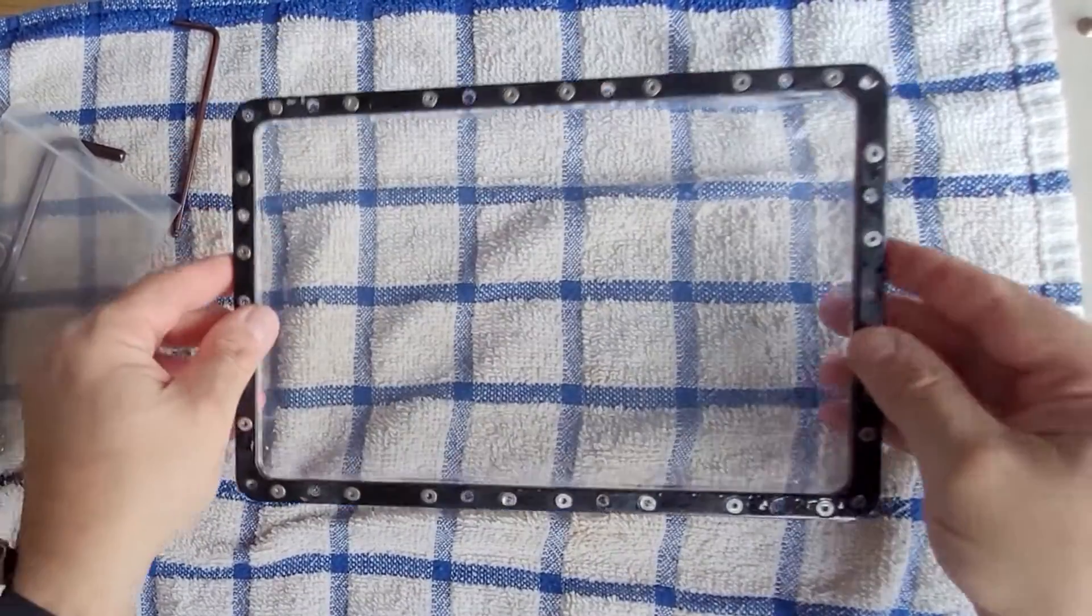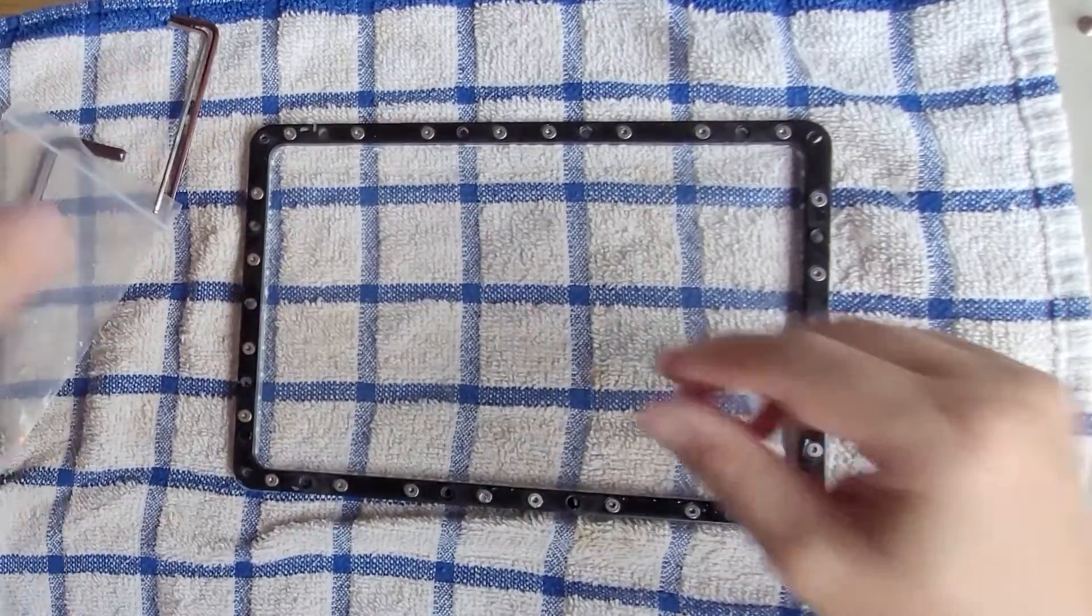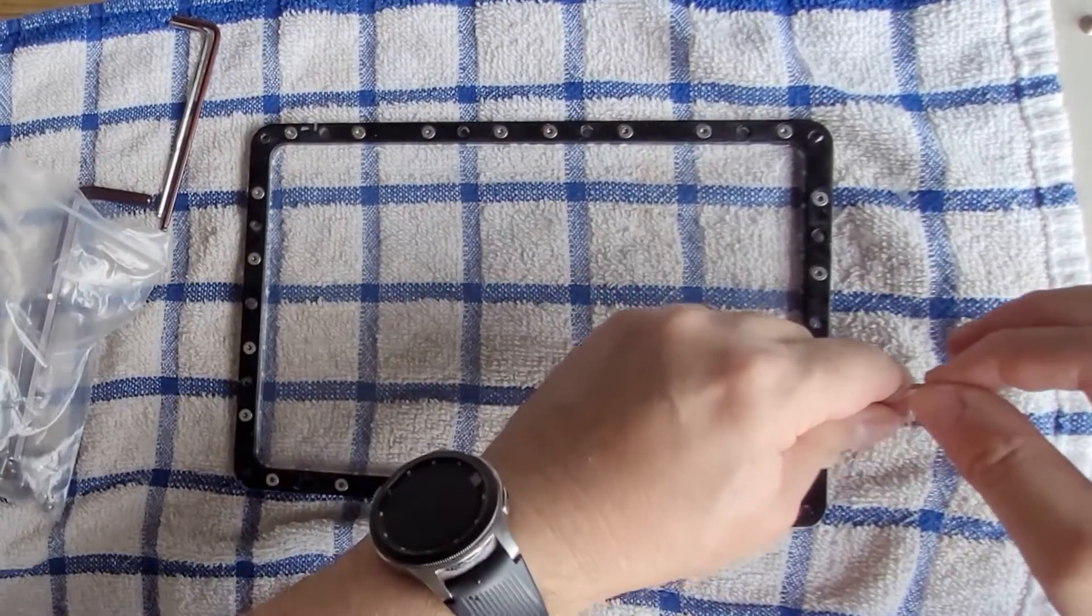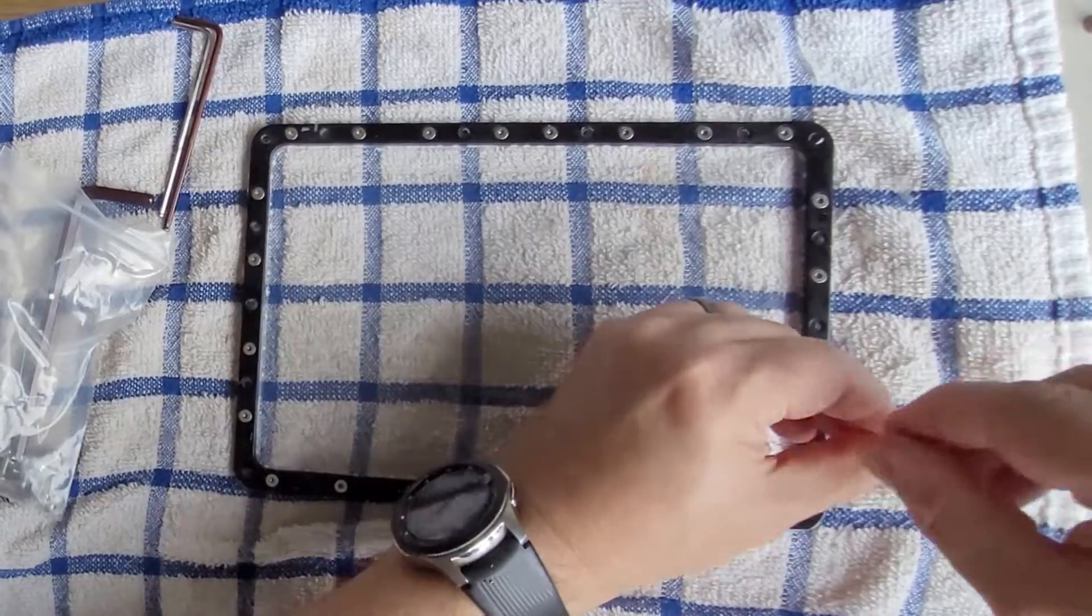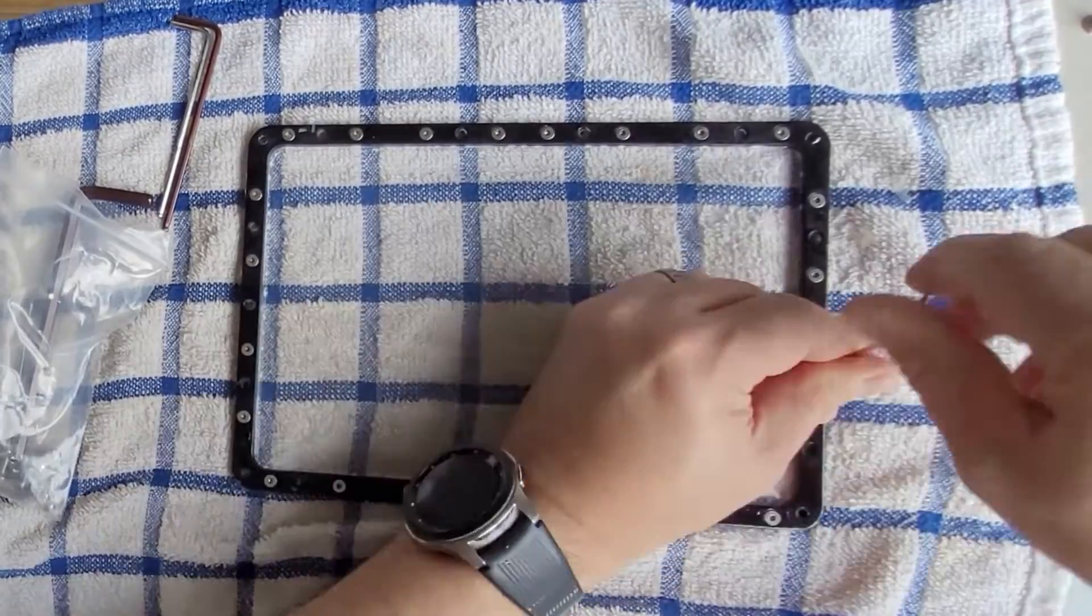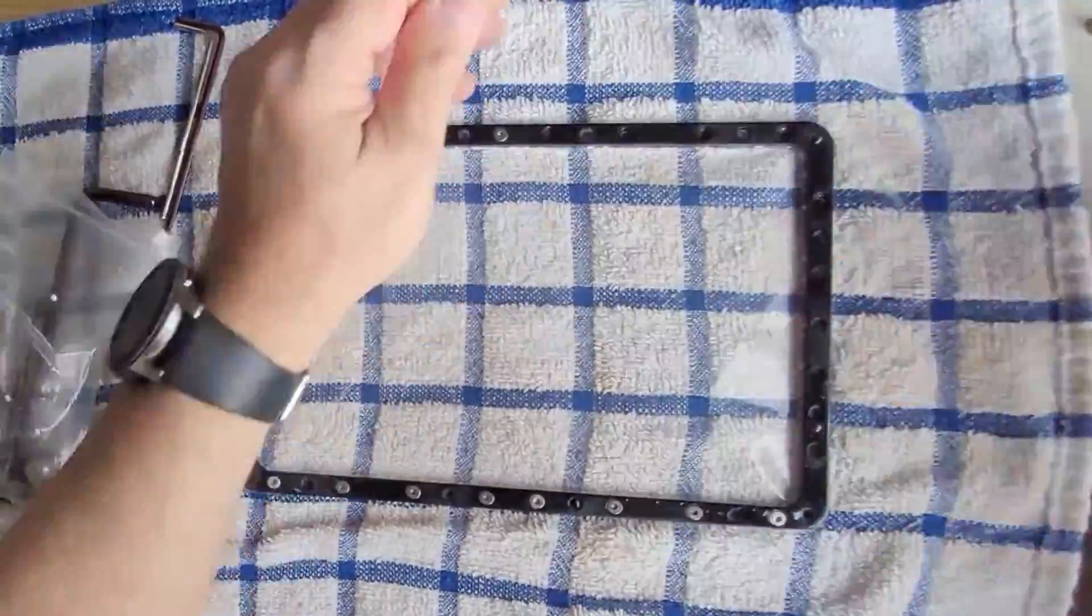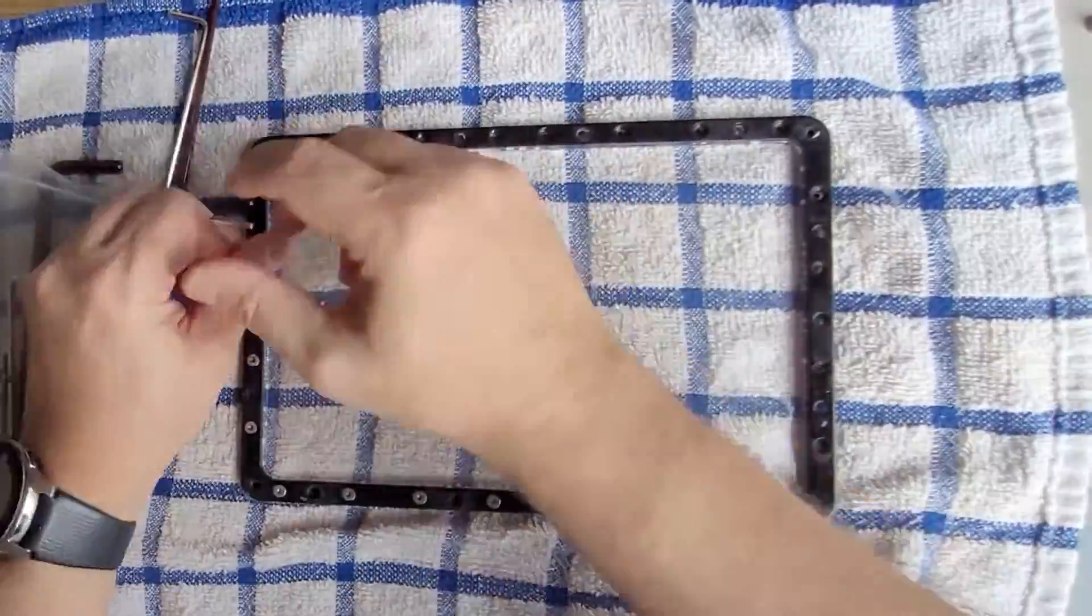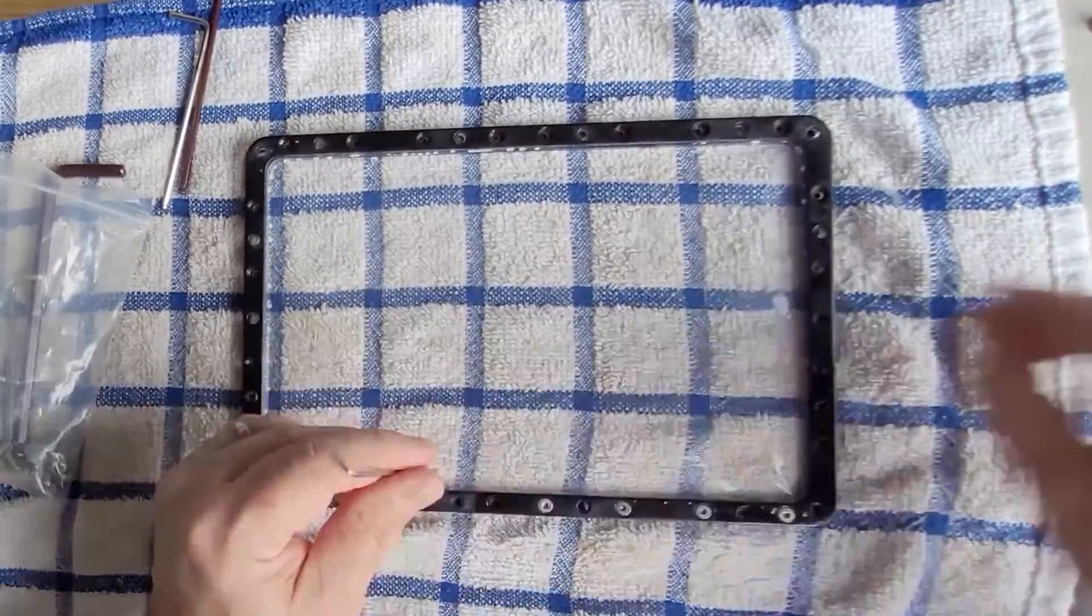And once you've got all of those screws off, the first layer anyway, take out your FEP with the metal barrier that surrounds it, flip it over, and you'll see the next set of screws, oh here we go again, that need to be undone. Now they are a different size on the Saturn anyway, and on most printers it is the same. So take your Allen key and work your way around and undo all of these screws. Now make sure that you put them somewhere safe. And again, be really careful, you don't want to be turning their heads.